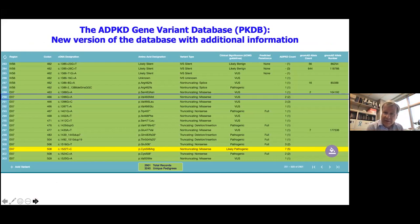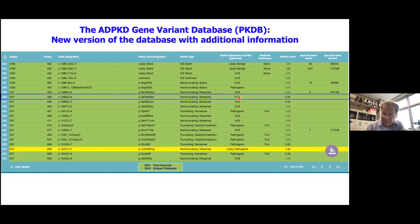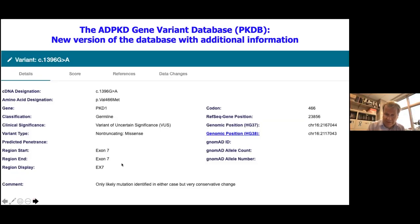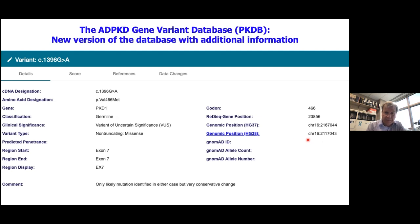We're further updating the database with new information. For variants considered of uncertain significance, we're adding data on how commonly the variant is found in a population of normal individuals, and trying to determine whether it might be a fully penetrant variant. On the back page we've added additional information about where in the genome the variant is located — helpful for researchers extracting information from whole exome sequences — and we're also adding data from gnomAD.